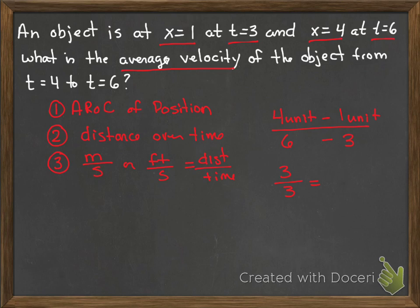So our average velocity is 1 unit of distance per unit of time.